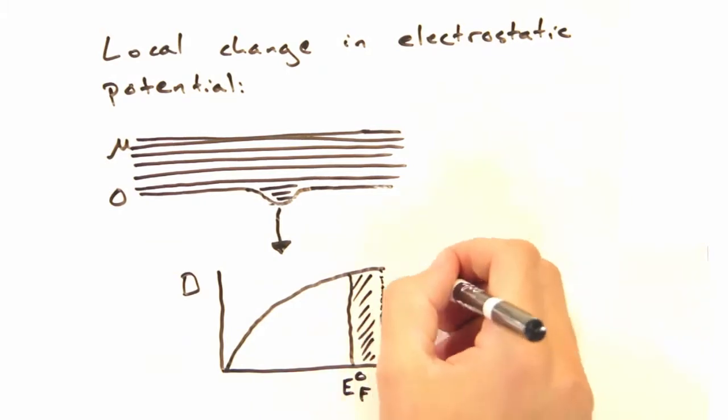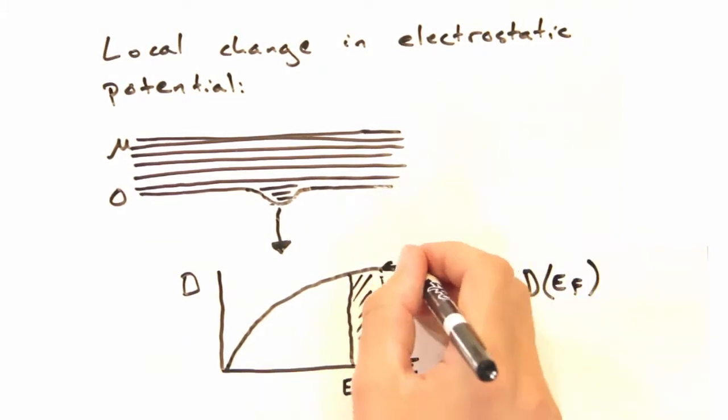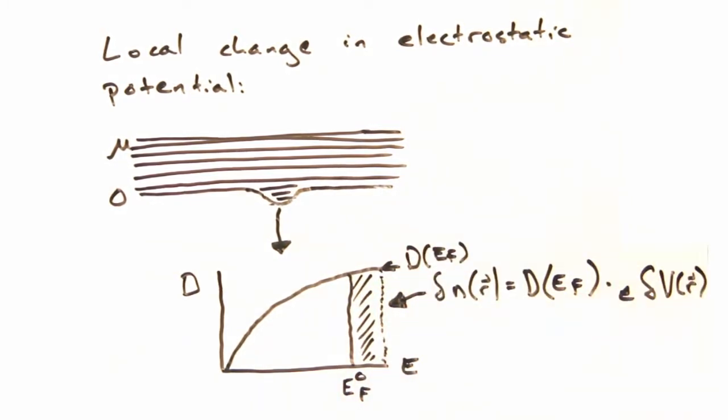Well, more charge means more energy. So would the graph just shift by the charge times delta V? Indeed it does. And we can figure out the resulting change in the electron density using the rectangle approach we used last time, where the height is the density of states at the Fermi level, and the width is the distortion, E delta V.